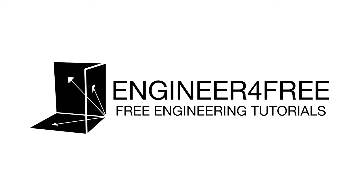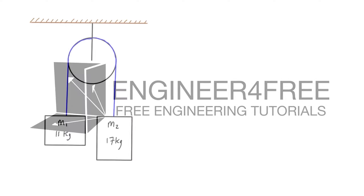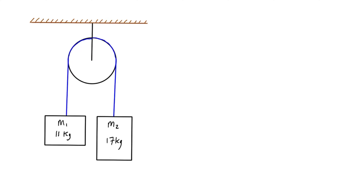Welcome back. In this video we're going quickly through an Atwood machine problem. An Atwood machine is a type of kinetic pulley problem where we have a single frictionless, massless, inertialess pulley — which means the tension in the cable is the same on both sides. We'll have one mass accelerating upward and the other accelerating downward because they have different masses.